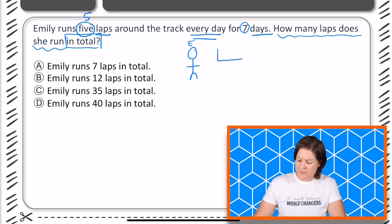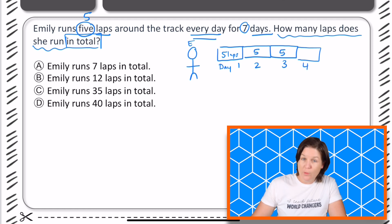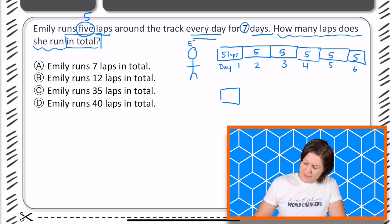So if this is day one, she would run five laps. And then day two, she would run five laps. And then day three, she would run five laps. Same thing, day four, she runs five laps. Day five, she runs five laps. Day six, she runs five laps. And then I'm just going to bring day seven down here. Day seven, five laps. Awesome.